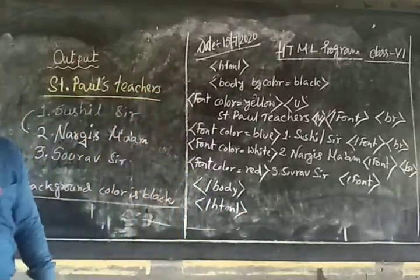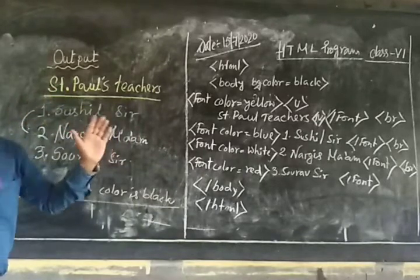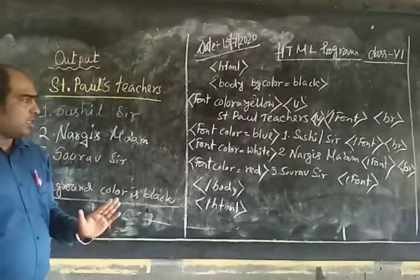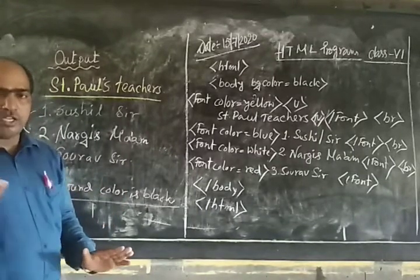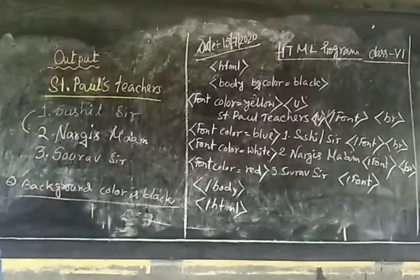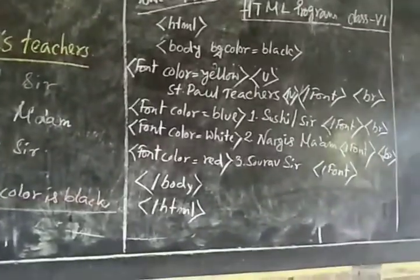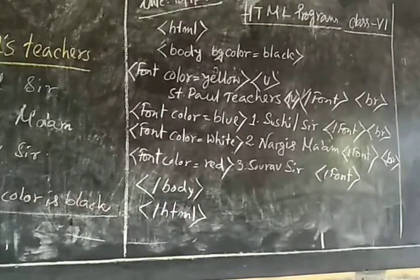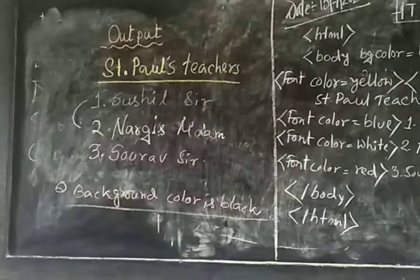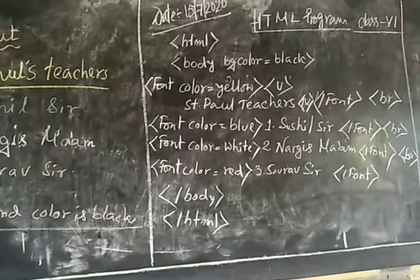So my students, this is the output and that is the program. You will follow the program and write it in your copy. Hopefully you will understand this class. If you have any doubt, you will write in your copy, and whenever I do an online class you can ask me. Thank you. Just follow the program. This is the output — you will write in your copy of this program. Bye.